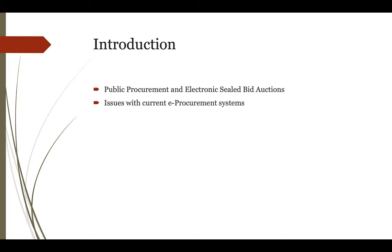Public procurement is one of the government activities most prone to corruption. E-procurement systems consisting of electronic sealed-bid auctions have been used for bid submission. They have been recommended to increase transparency, outreach, and competition among different parties. While good in intentions, they are still prone to fraud and corruption. Third-party or trusted software are used with the trust that the bid recipient — whether the software or the person — won't leak the bid to other bidders or manipulate the bidding process to favor certain bidders.